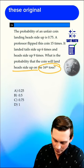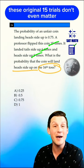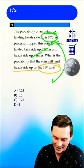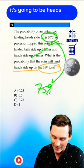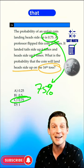Well, guess what? These original 15 trials don't even matter because the statistic is just that it's going to be heads 75% of the time. So the best answer is C.